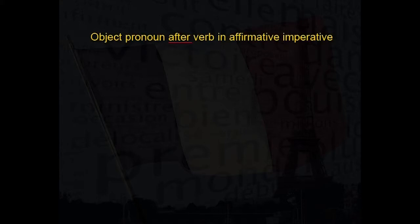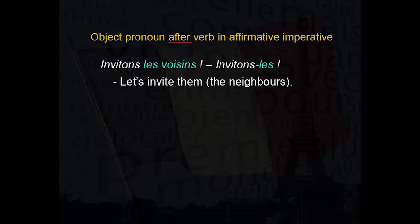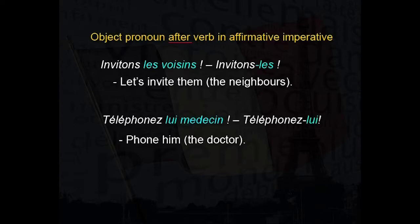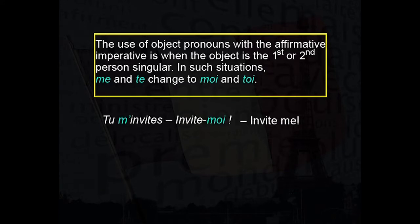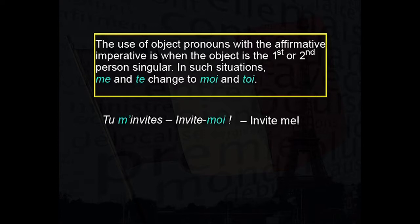But with the affirmative imperative, the object pronoun comes after the verb and is attached to the verb with a hyphen. For example, Invitons les voisins becomes Invitons-les — Let's invite them. Téléphonez le médecin becomes Téléphonez-lui — Phone him, the doctor. Another rule: when the object is the first or second person singular in the affirmative imperative, me and te change to moi and toi. Tu m'invites becomes Invite-moi — invite me. Vous me téléphonez becomes Téléphonez-moi — phone me.